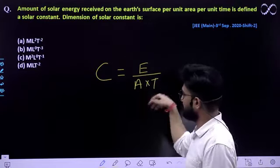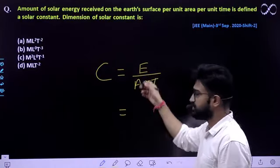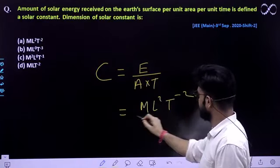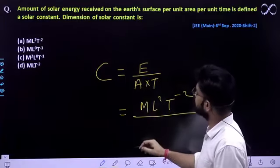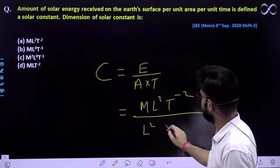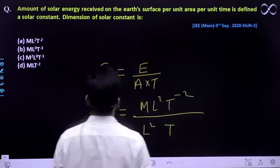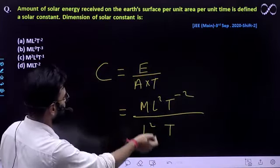This is given to you. This unit you already know. Energy's dimension is ML²T⁻². Simple, jaldi se karenge. Area ka dimension kitna hota hai? L². Time ka already given hai, time. So, per unit area per unit time. This is it.